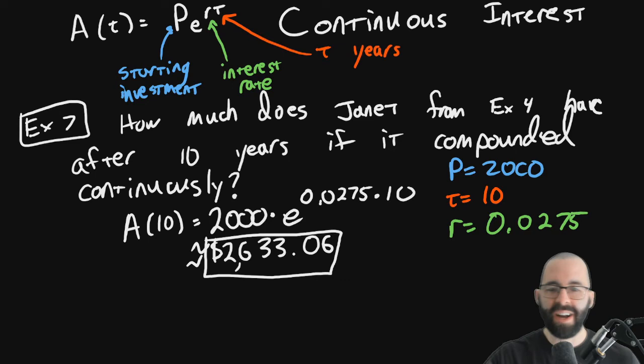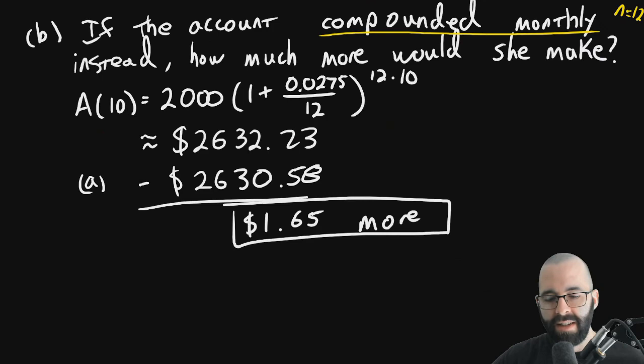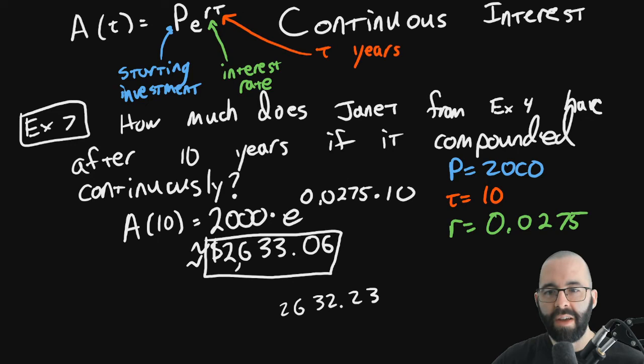How much more is she making? Remember, the more it compounds, the more you're making. How much more is she making if it compounded continuously? Let's go back to example four and look. Example four said, if it compounded quarterly, it'd be $2,630.58. If it was monthly, it'd be $2,632.23. This is the monthly amount. Oh boy, we're getting an extra 83 cents. Woohoo! Good thing it's compounding continuously. Again, continuous growth means it's growing all the time, whereas compound interest means you're only getting that interest payment every once in a while, which is normal. But continuous growth is very, very common for like masses and stuff or height.